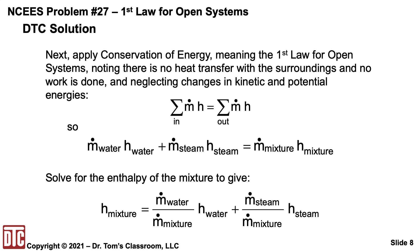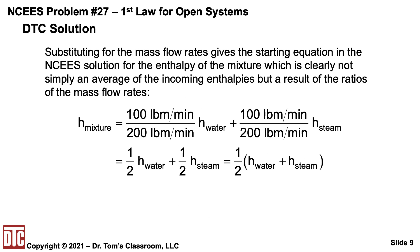Do the algebra and solve for h-mixture. What you get is: m-dot water over m-dot mixture times h-water, plus m-dot steam over m-dot mixture times h-steam. This is the general result you get regardless of what the mass flow rates are, and this is what is left out of the NCEES solution. Plugging in the mass flow rates gives 100 over 200 times h-water plus 100 over 200 times h-steam.